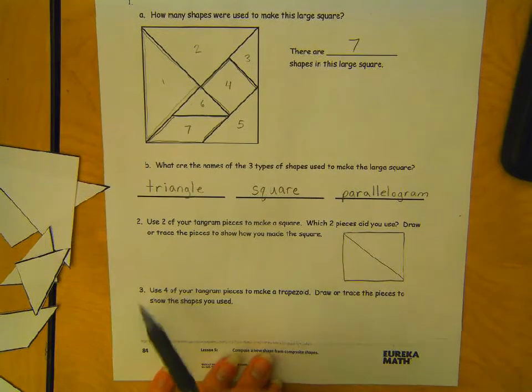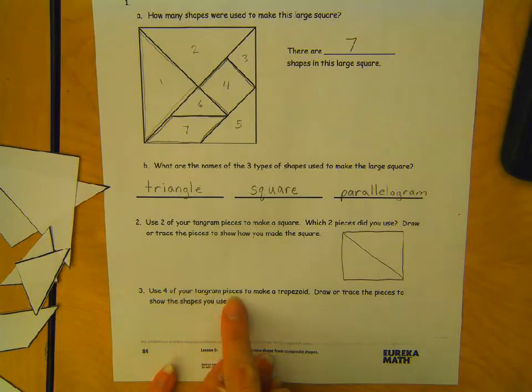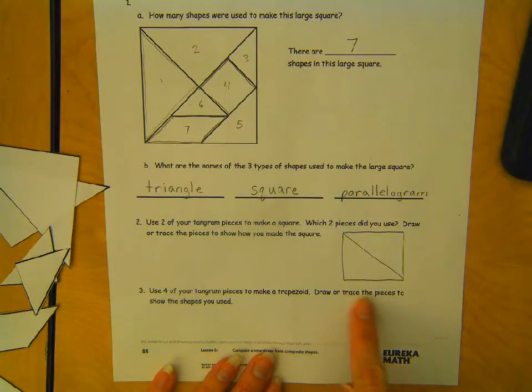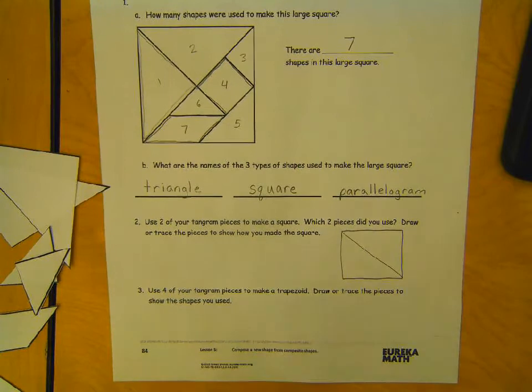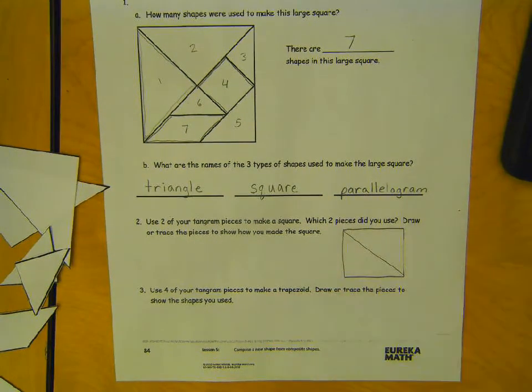Okay, number 3 says, use four of your tangram pieces to make a trapezoid. Draw or trace the pieces to show the shapes you use. So, we need to use four pieces to make a trapezoid. Okay, so remember, a trapezoid is that shape right there. Okay? So, but we have to use four pieces. So, I'm going to use...